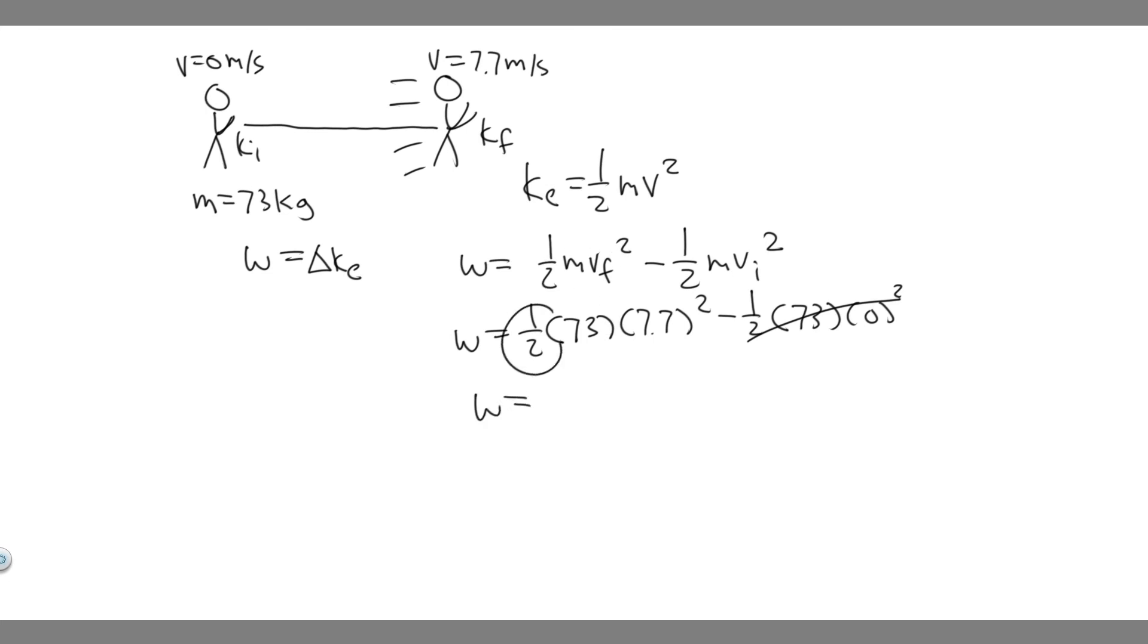So you just want to plug this in: 0.5 times 73 times 7.7². When you go ahead and do this, you're going to get the work equals 2,164.085. I'm just going to round to 2,164.